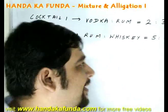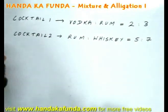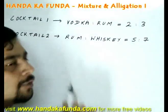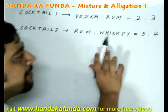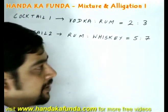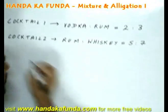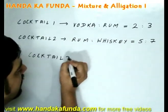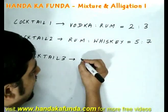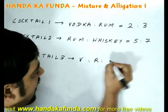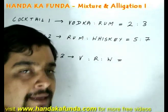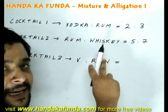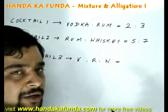Now let us look at a slightly different case. Suppose cocktail 1 has vodka and rum in the ratio of 2 to 3, and another cocktail has rum and whiskey in the ratio of 5 to 7, and I mix them to make cocktail 3. Is this any different from the previous case? Yes it is — because in the previous case all ingredients were in the same cocktail, and now I am mixing two different cocktails.